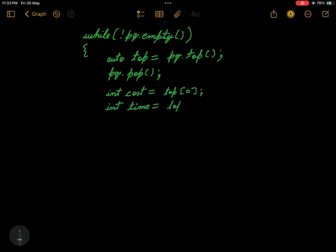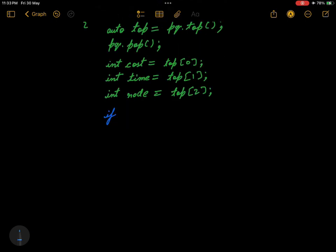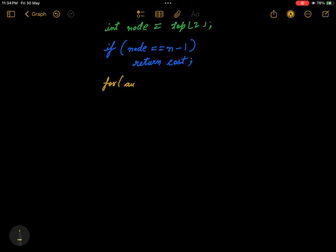Now let's start our traversal. While the queue is not empty, we'll get the node, pop it. Cost will be top[0], time will be top[1], and node will be top[2]. Now we check if we reached our node, if node equals n minus 1, then we will return the cost directly from here. Otherwise, we will traverse.